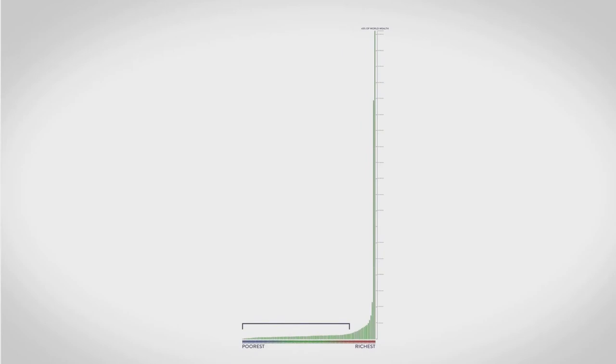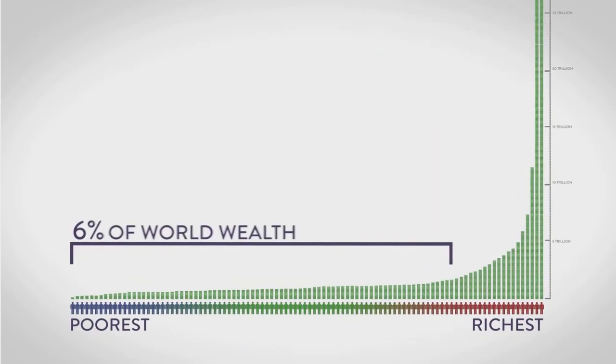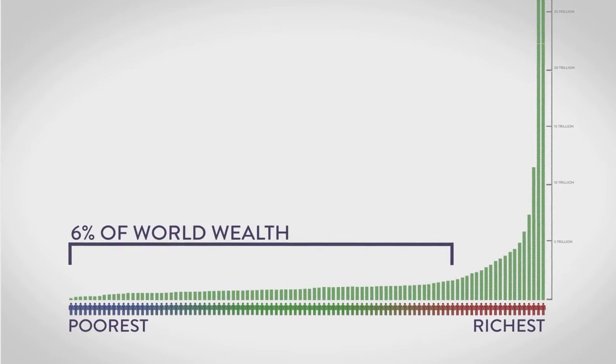The bottom 80%, meanwhile, that's 8 out of every 10 people, have just 6% between them. But even this doesn't really show how extreme things have become.